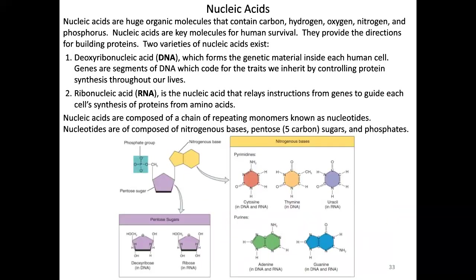Our final category of organic compounds — the most complex structurally — are the nucleic acids. They contain carbon, hydrogen, oxygen, nitrogen, and phosphorus — five major elements. They are key molecules for human survival because they provide the directions for building our proteins. There are two varieties: deoxyribonucleic acid, abbreviated DNA, and ribonucleic acid, abbreviated RNA. DNA is the genetic material inside each human cell, and we'll talk more about genes in the next lecture.